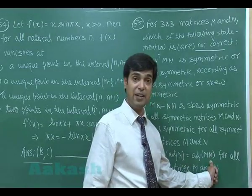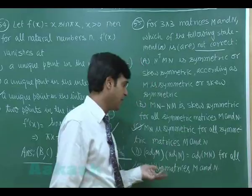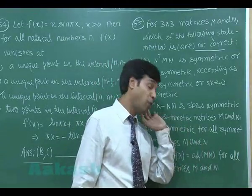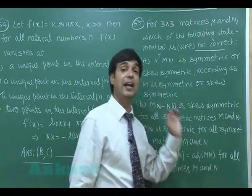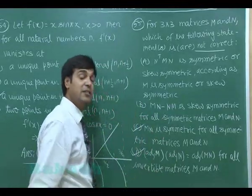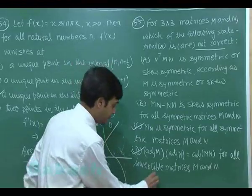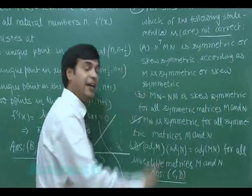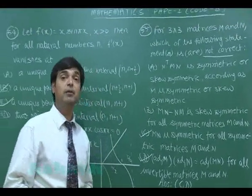Statement 4: adj(M)·adj(N) = adj(MN) for all invertible matrices M and N. This is incorrect because the correct property (reversal law) states adj(MN) = adj(N)·adj(M), not adj(M)·adj(N). So statement 4 is also NOT correct. The incorrect statements are C and D. Let's go to question 56.